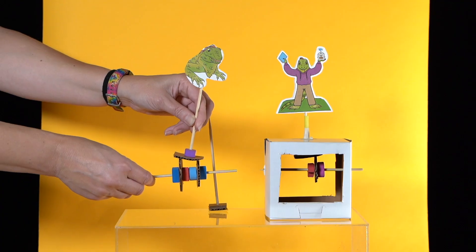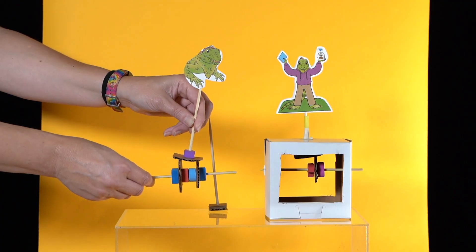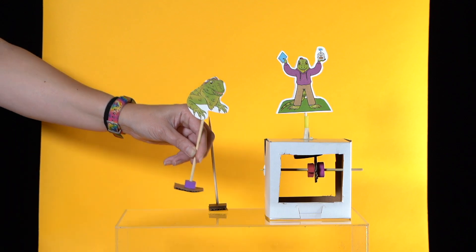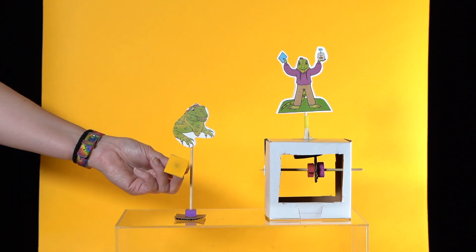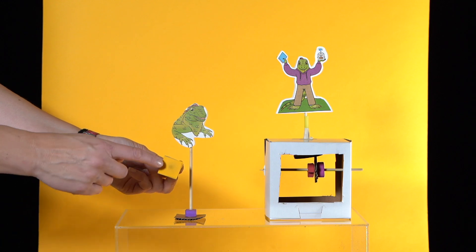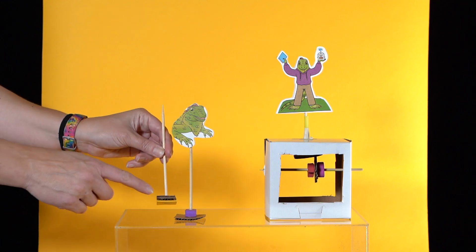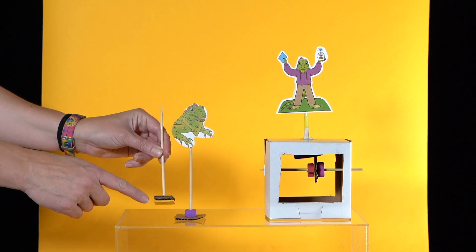The cam is able to move the cam follower because there is friction at the place they touch. You could increase the friction by sticking craft foam to the bottom of the cam follower, or you could increase the thickness of the cam follower's cardboard.